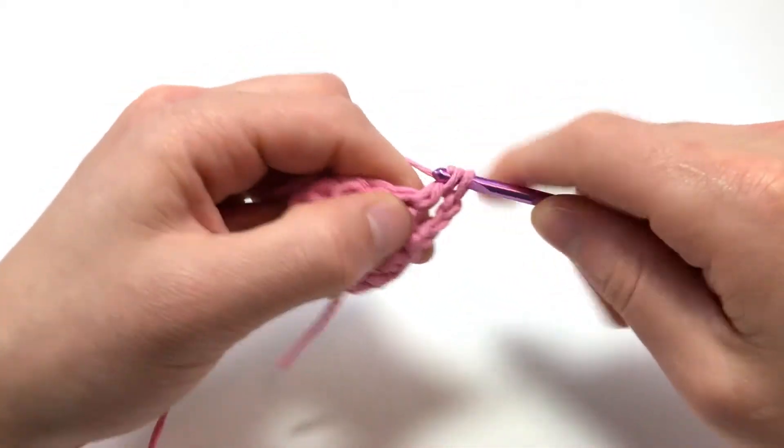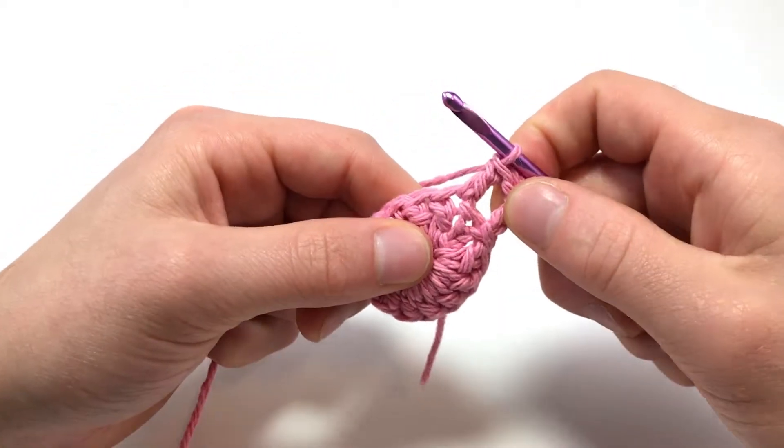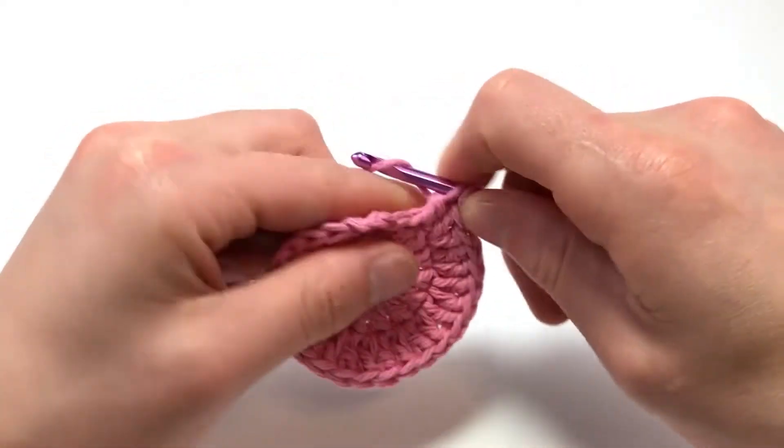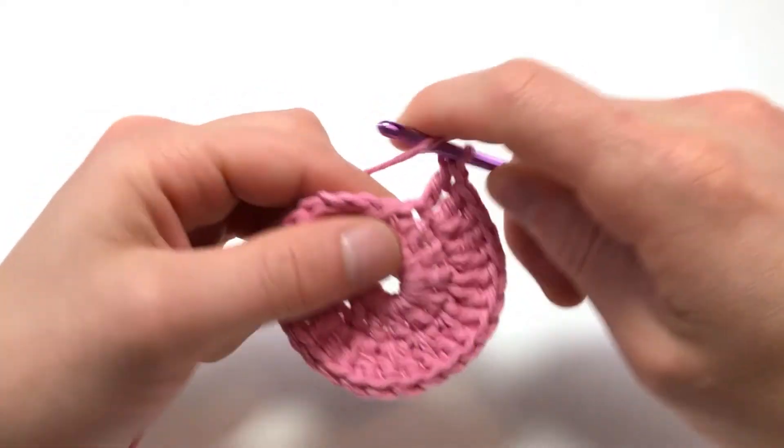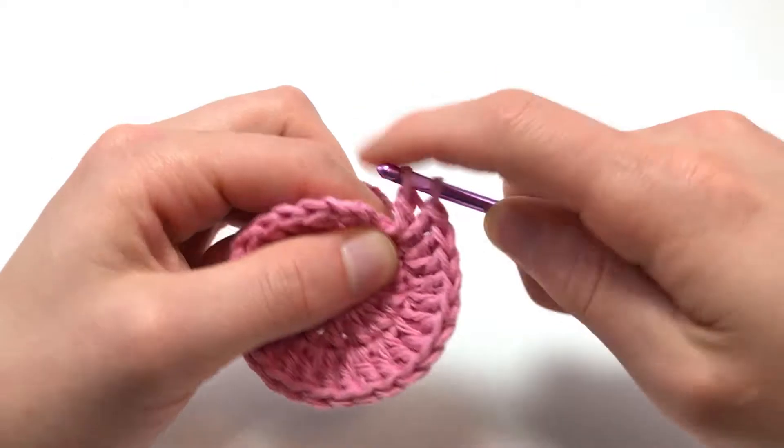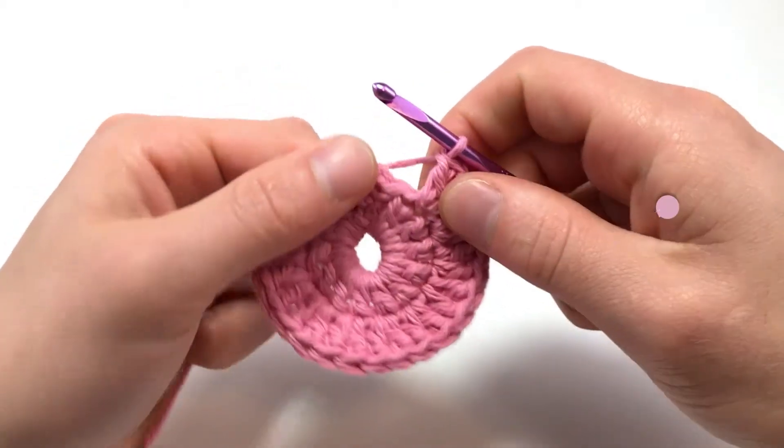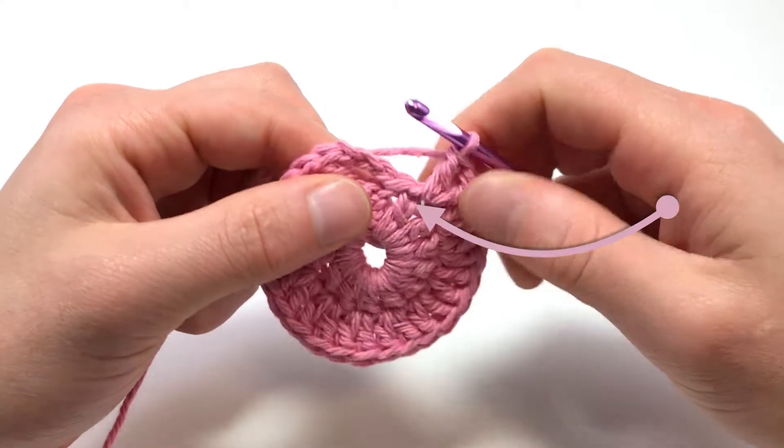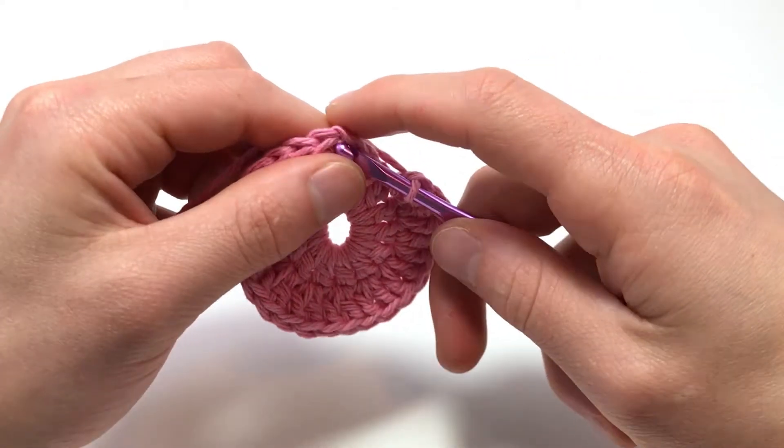For this round we're doing an increase into each stitch around. There should be 24 stitches by the end. When you get to the end and have 24 stitches, not including our first chain 3, you want to skip our connecting slip stitch here and instead join the ends by making a slip stitch into the top chain like we did before.